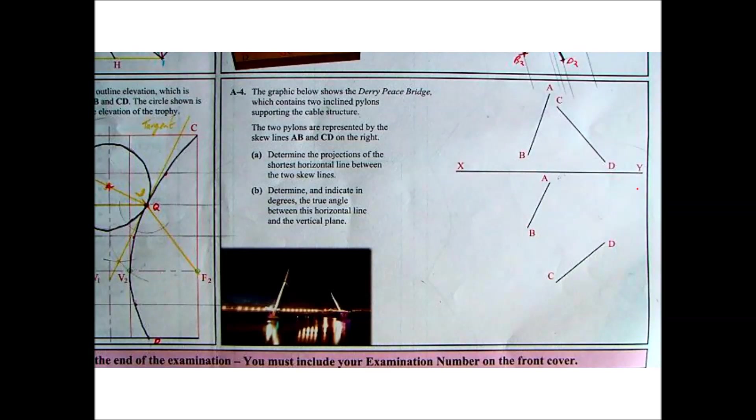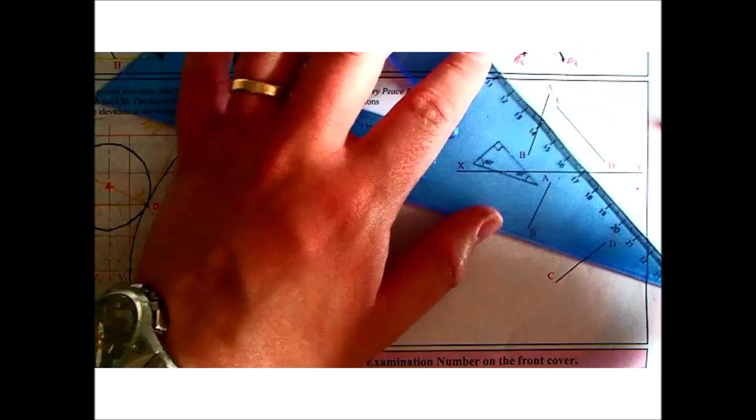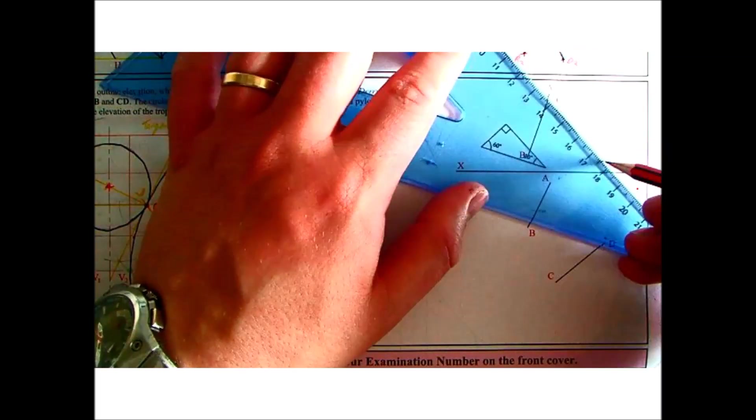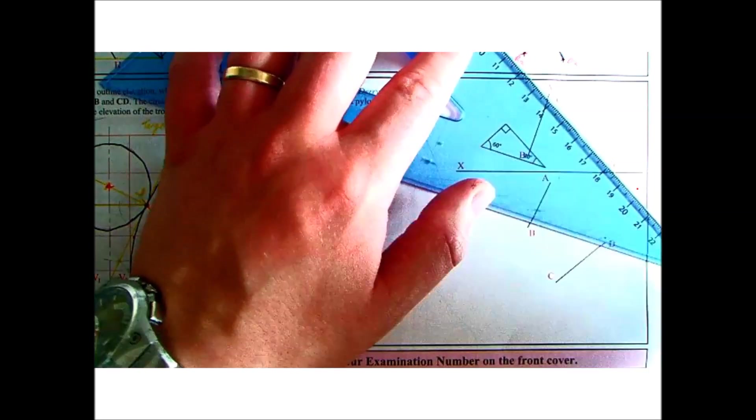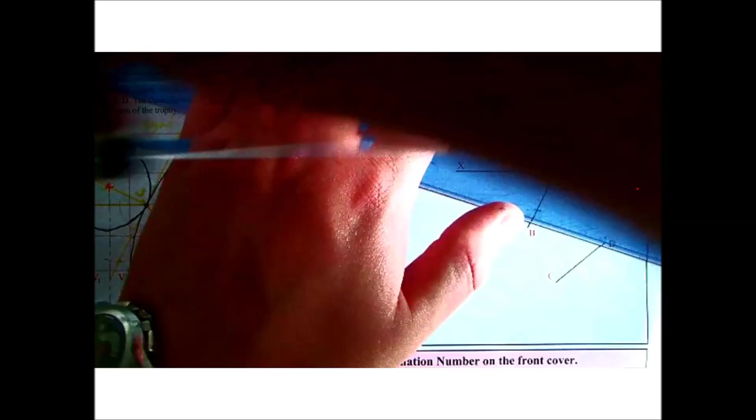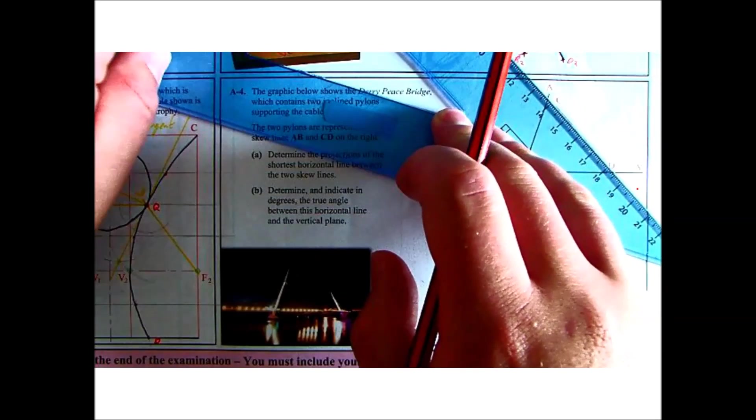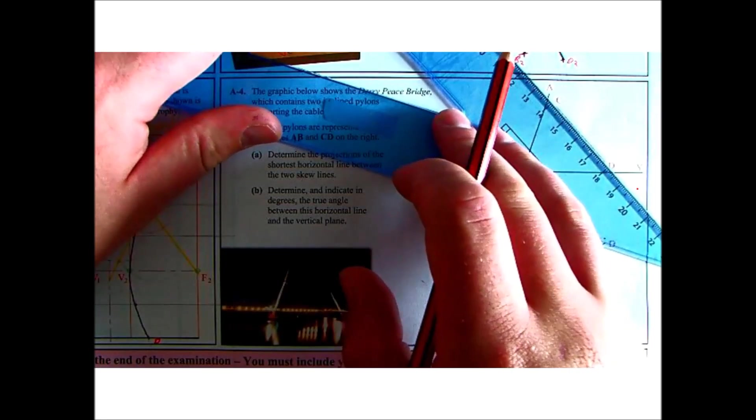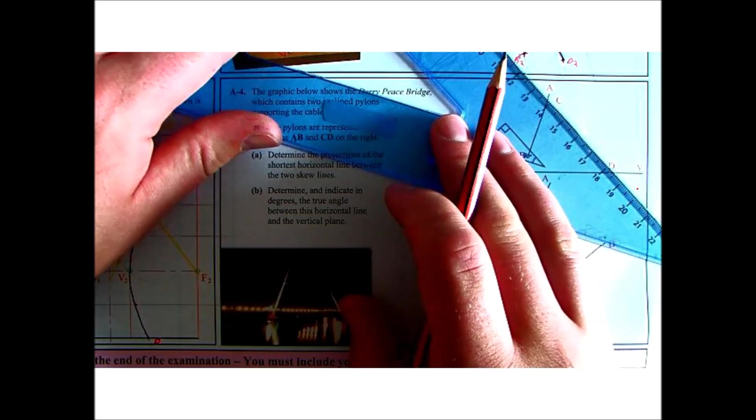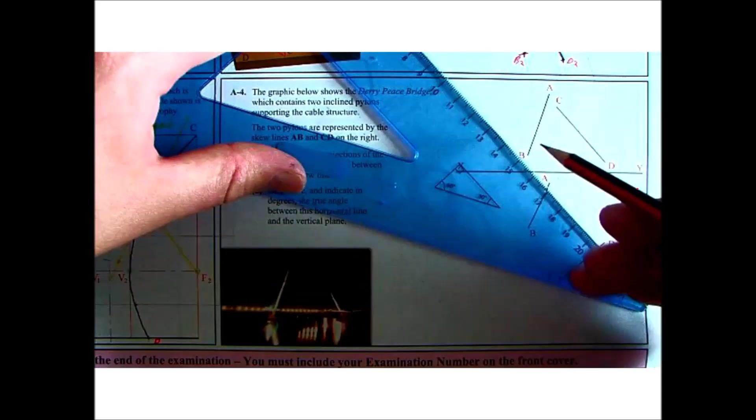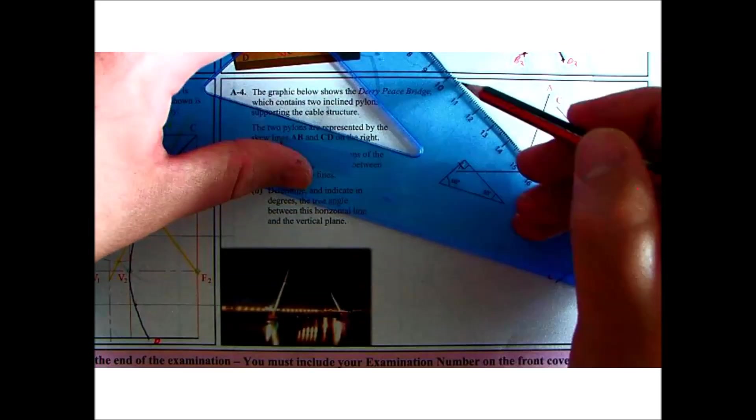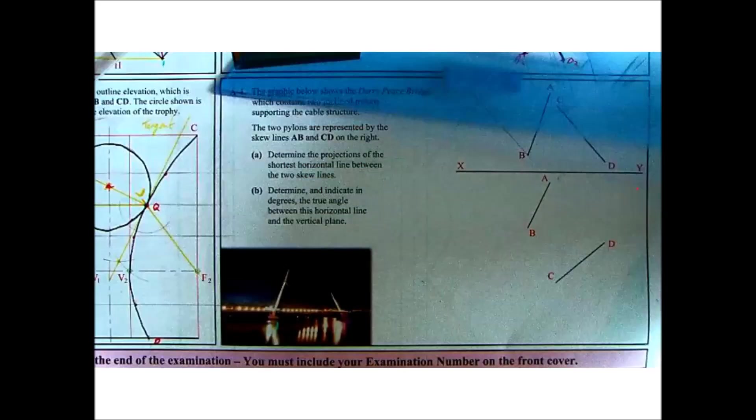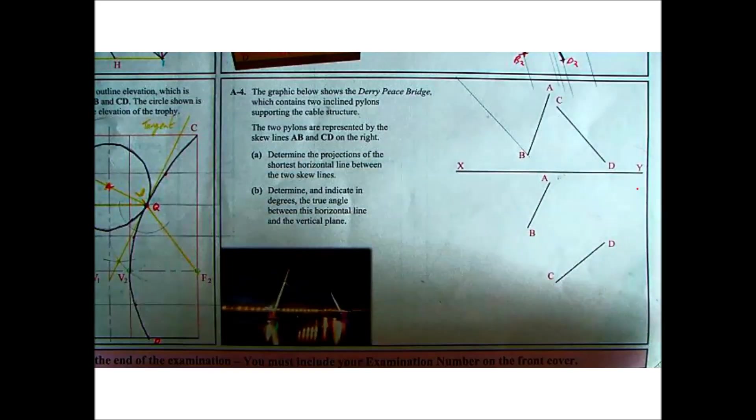So I think we might have to go with that. So bring your angle of CD over to the edge of the other skew line. So in this case point B.